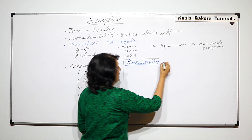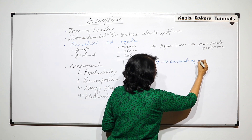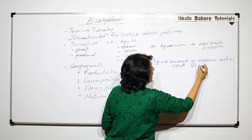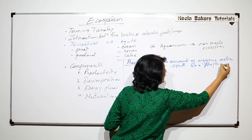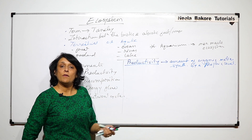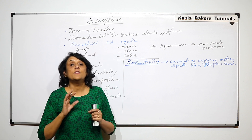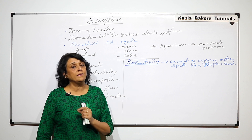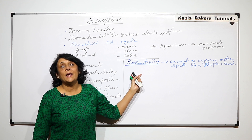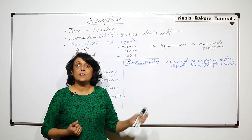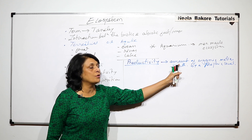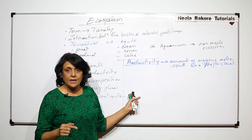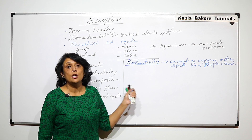Productivity basically means the amount of organic matter synthesized by a trophic level. In an ecosystem, there are various kinds of living organisms, and we divide them based on the job or functions they perform. Plants, for example, are autotrophs — they are producers. They use sunlight to produce organic matter, so they come at the bottom of the ecosystem. Their job is to produce organic matter using solar energy.